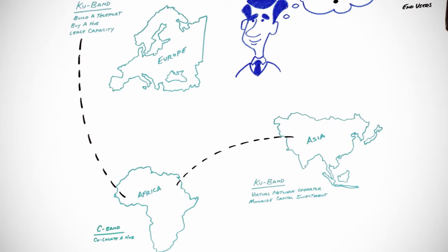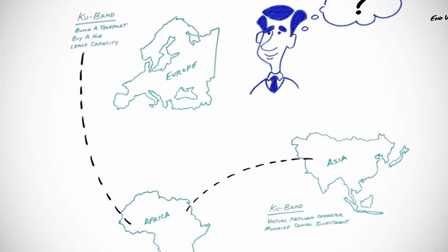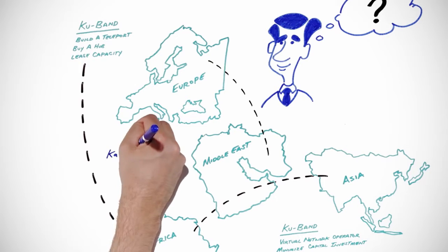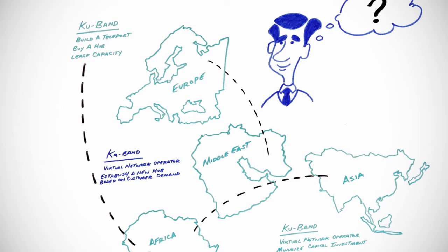Suddenly, high throughput satellite capacity becomes available. You see new opportunity and decide to expand into the Middle East, this time over high throughput KA band. You opt for a virtual network operator agreement with a plan to establish a new hub later based on customer demand.